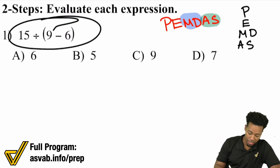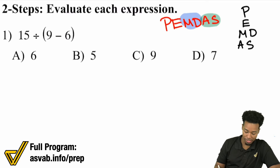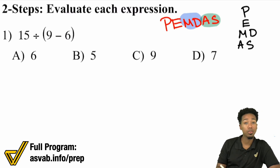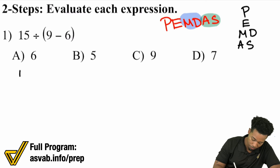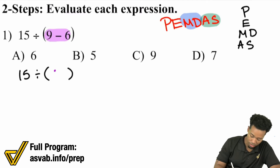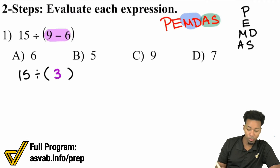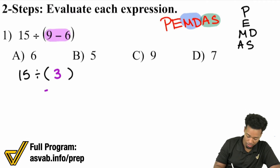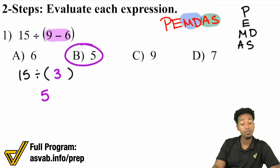15 divided by (9 minus 6). Parentheses is what we do first. We'll leave that 15 by itself and inside that group, 9 minus 6 becomes 3. So this becomes 15 divided by 3, and 15 divided by 3 is 5. Nice and easy.